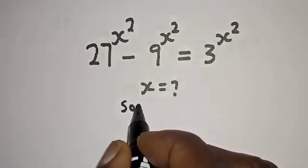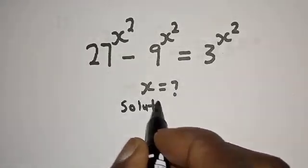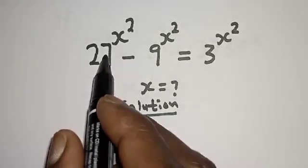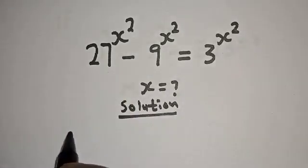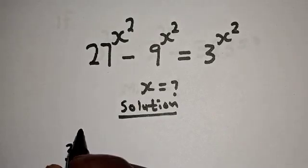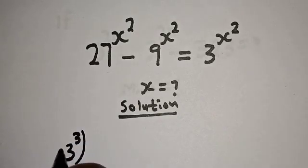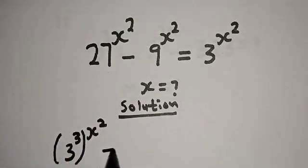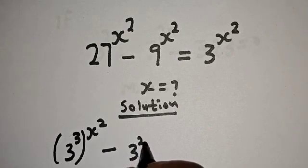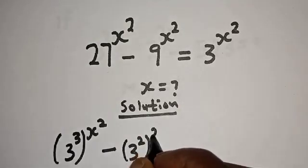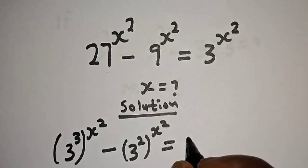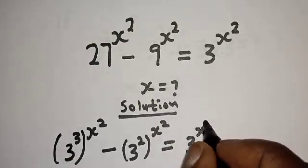Solution. 27 raised to power x squared can be written as 3 raised to power 3, raised to power x squared. And 9 raised to power x squared can be written as 3 raised to power 2, raised to power x squared. This equals 3 raised to power x squared.